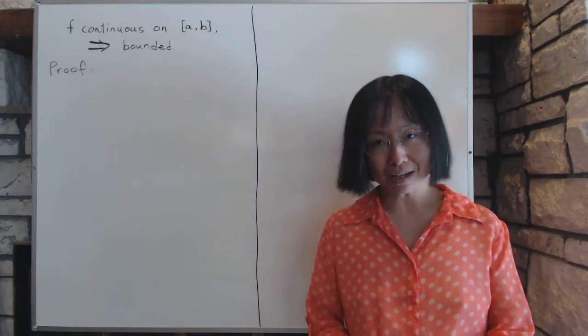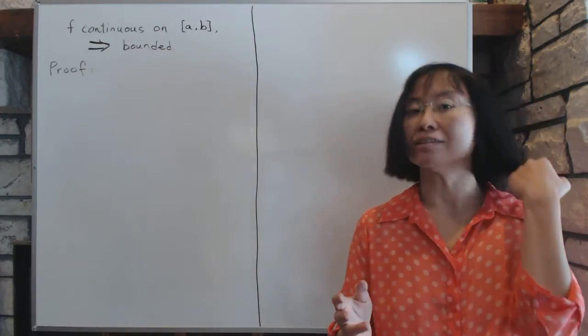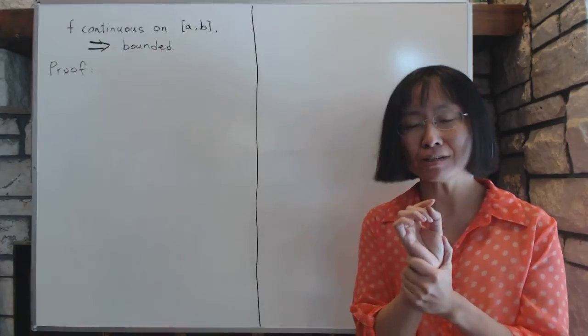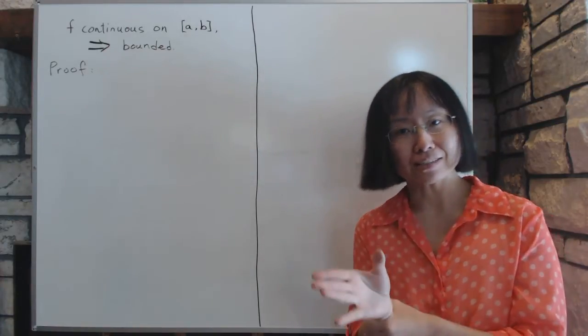In chapter 3, we're going to talk about continuous functions. A continuous function, by definition, is one such that as x approaches x0, the limit of f also approaches the value of f at x0.